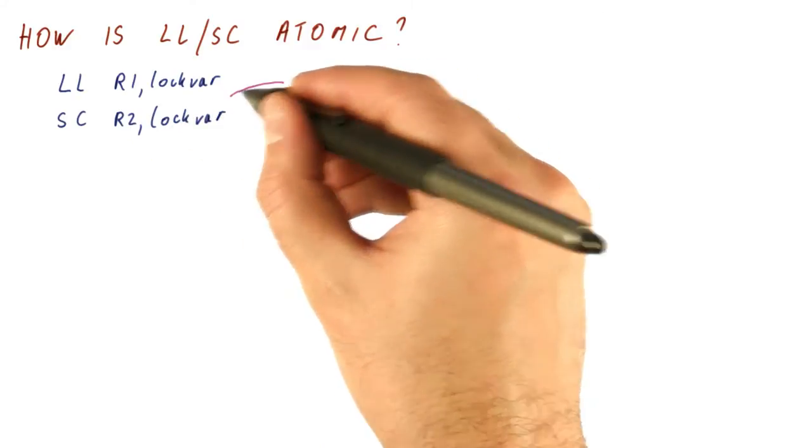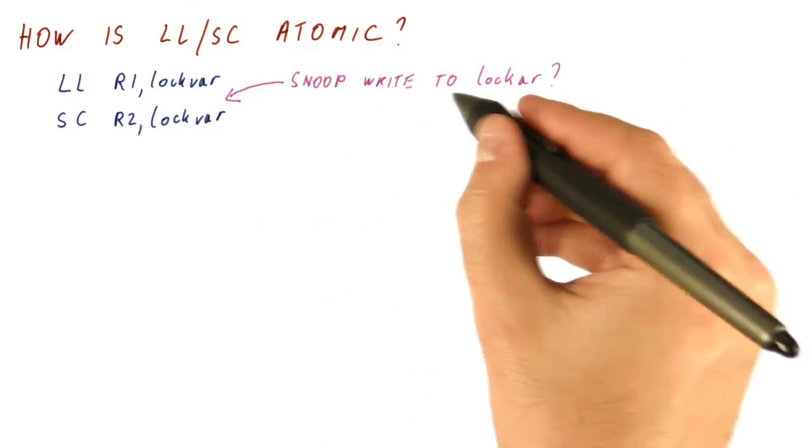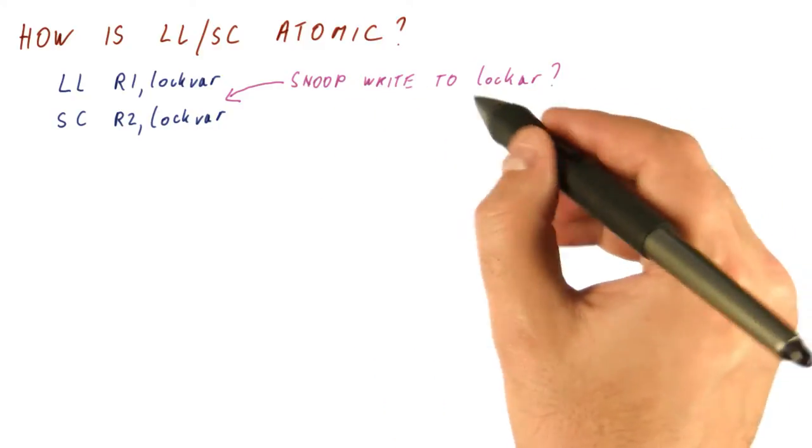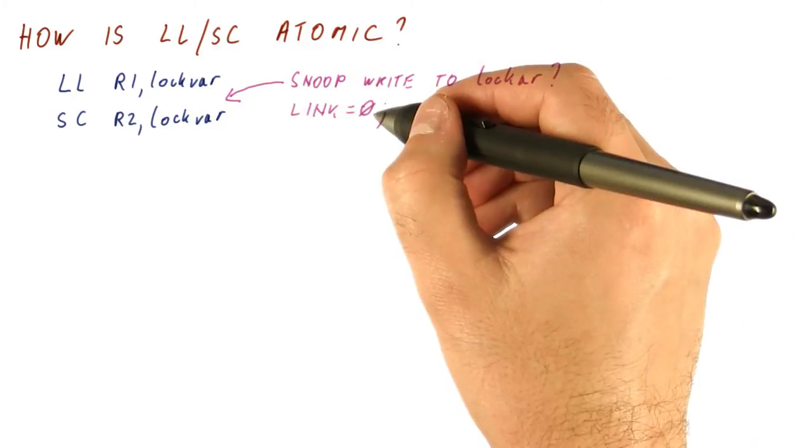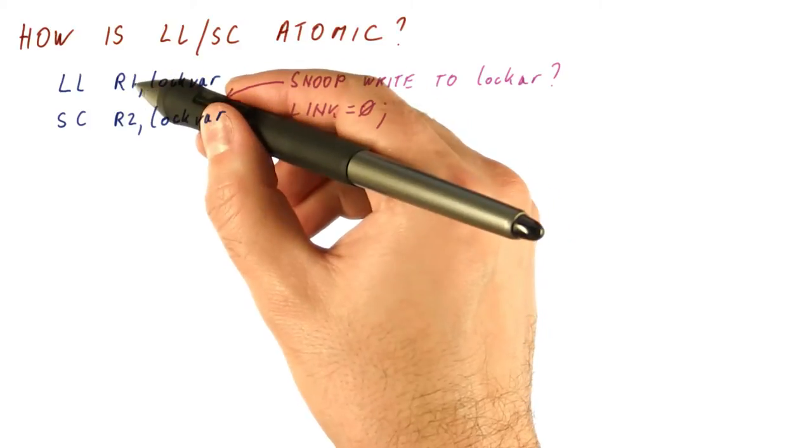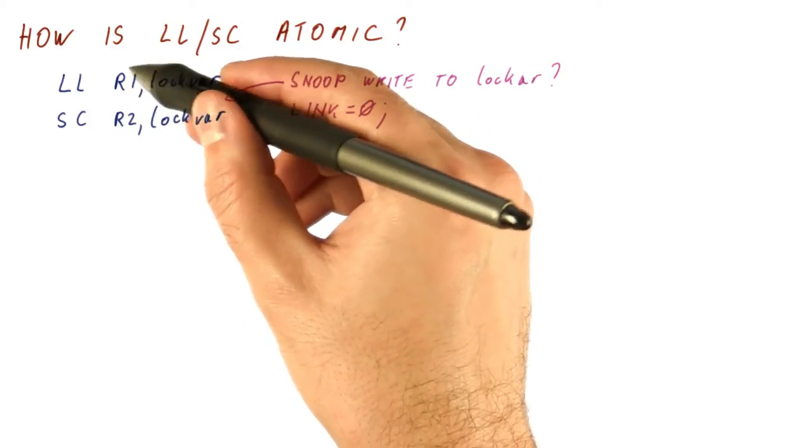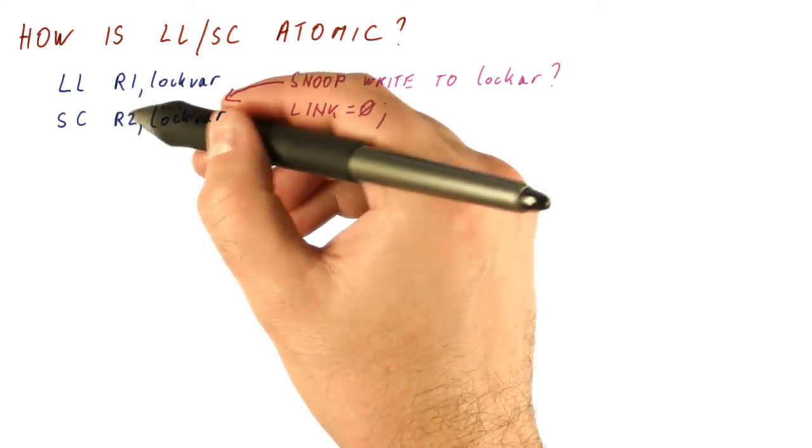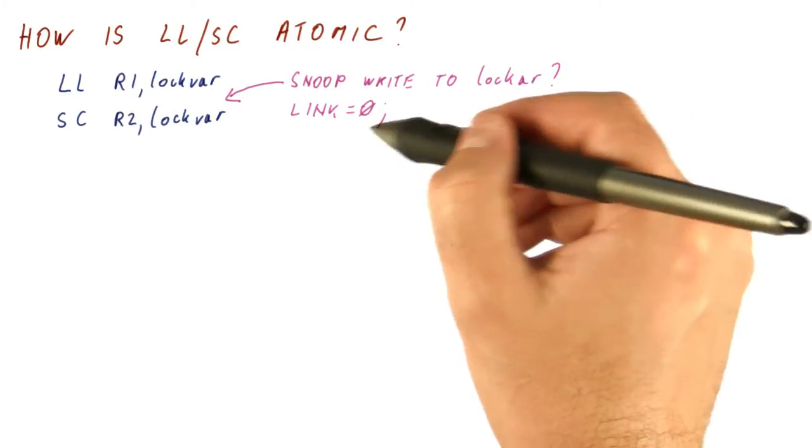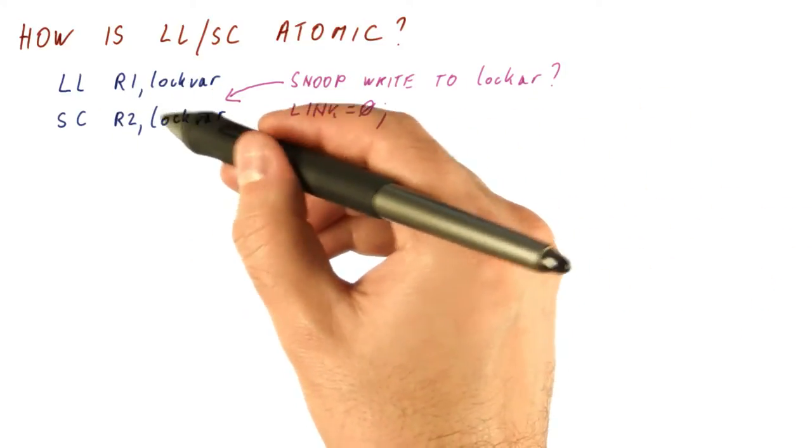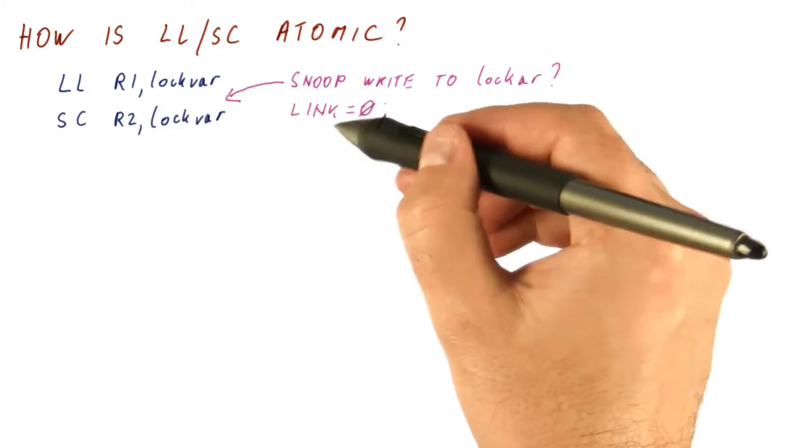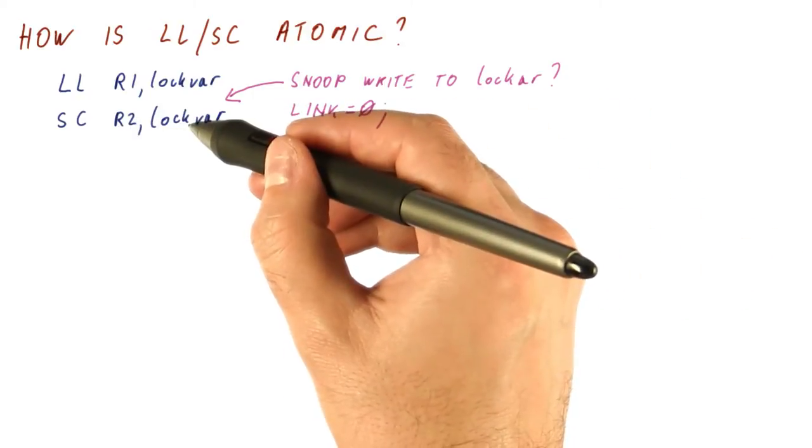And the key for that is that if we snoop a write to lock var at any time, we put a zero in the link register. So if the load link loads the lock variable and we see that it's free and we try to do a store conditional, but somebody beats us to it, then the store will fail because it will observe that the link register doesn't match the address of the lock var.